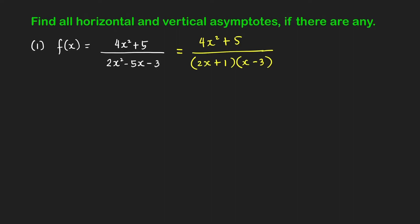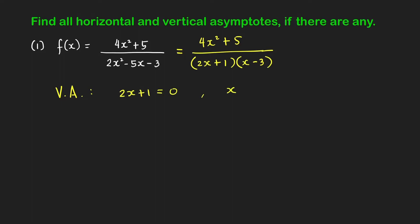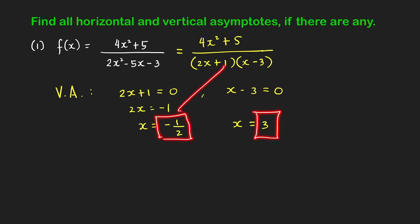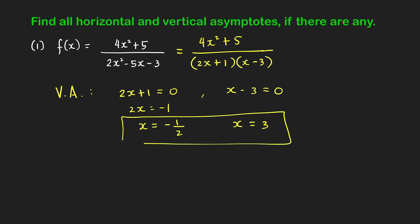The vertical asymptotes are the lines x equals a where a is a zero of the denominator. The denominator equals zero when 2x plus 1 equals zero, giving x equals negative one-half, or when x minus 3 equals zero, giving x equals 3. So we have two vertical asymptotes: x equals negative one-half and x equals 3.